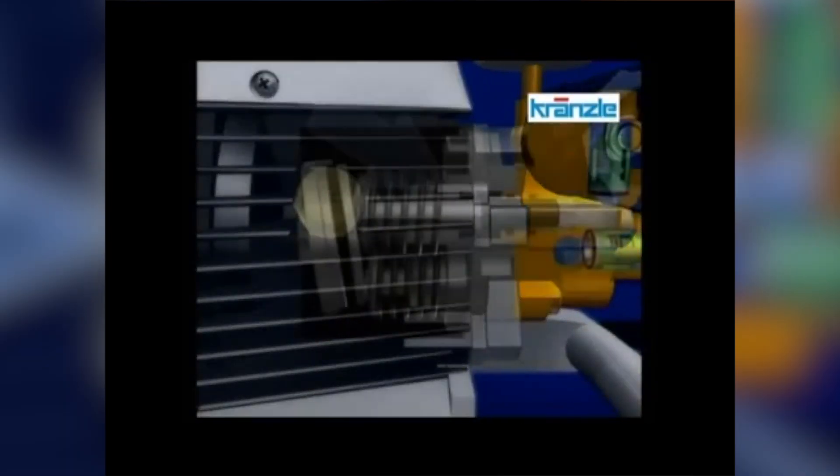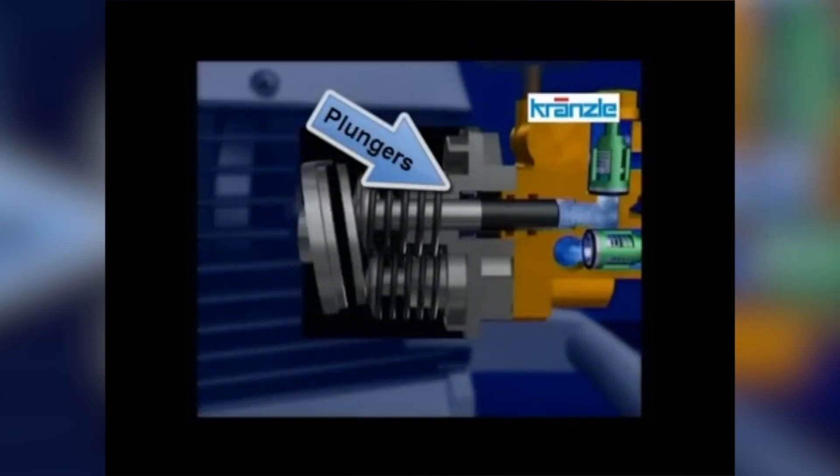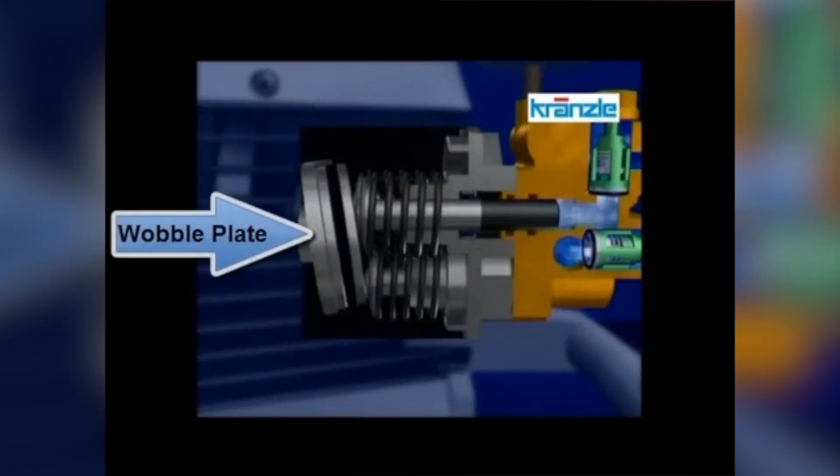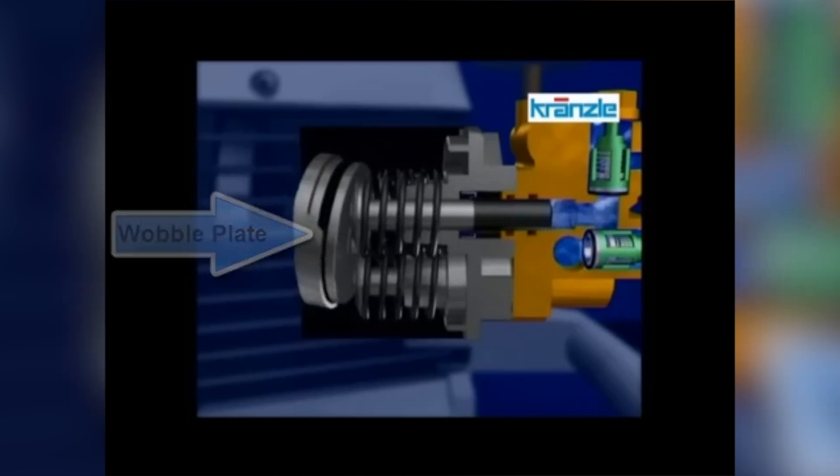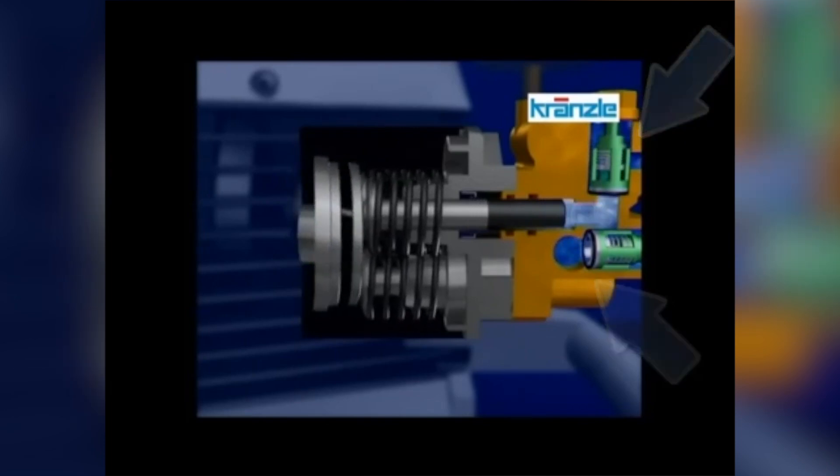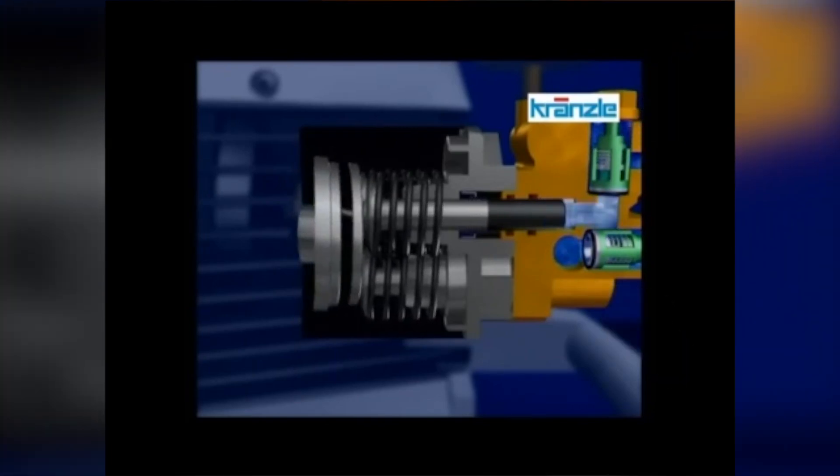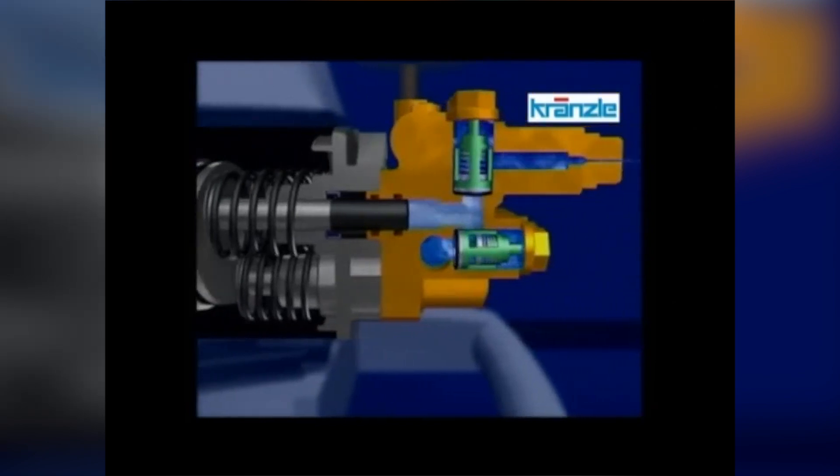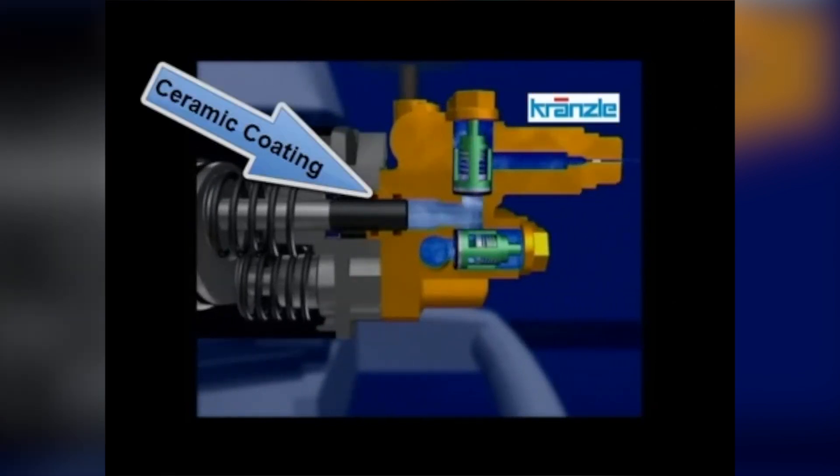First up is the wobble plate pump. This is an entry-level pump that uses a wobble plate connected to the driveshaft to push pistons back and forth, creating suction and then pushing the water out. There's a large spring for each piston to allow the wobble plate to push against them. This causes the pump to be around 70% efficient because it has to push against the water and the springs.